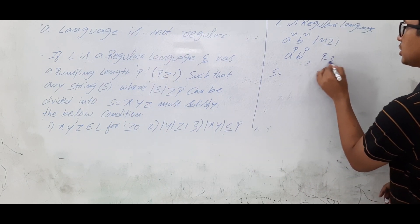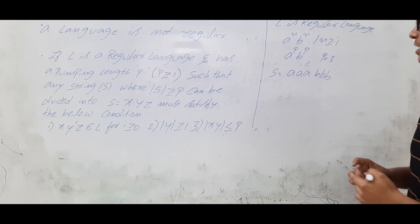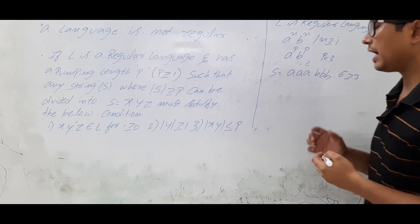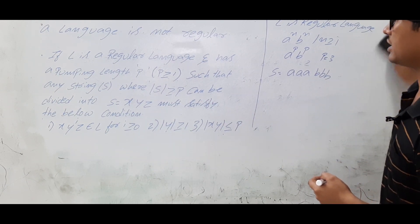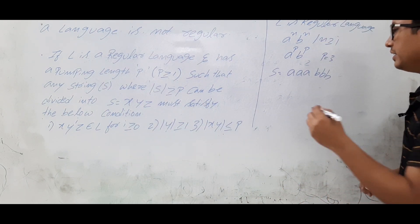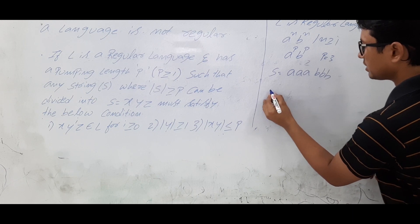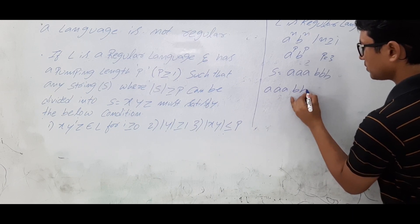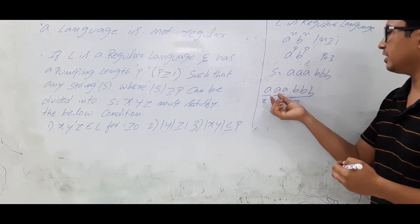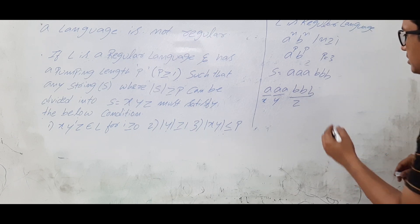Taking p equal to 3 I get the string 'aaabbb'. The length of the string is 6 and the p value is 3, so 6 is greater than or equal to 3 — the condition is satisfied. Now I will divide s into xyz. This string can be divided into three ways. One way: x = 'a', y = 'aa', z = 'bbb' — one a as x, two a's as y, and all b's as z. This is scenario one.